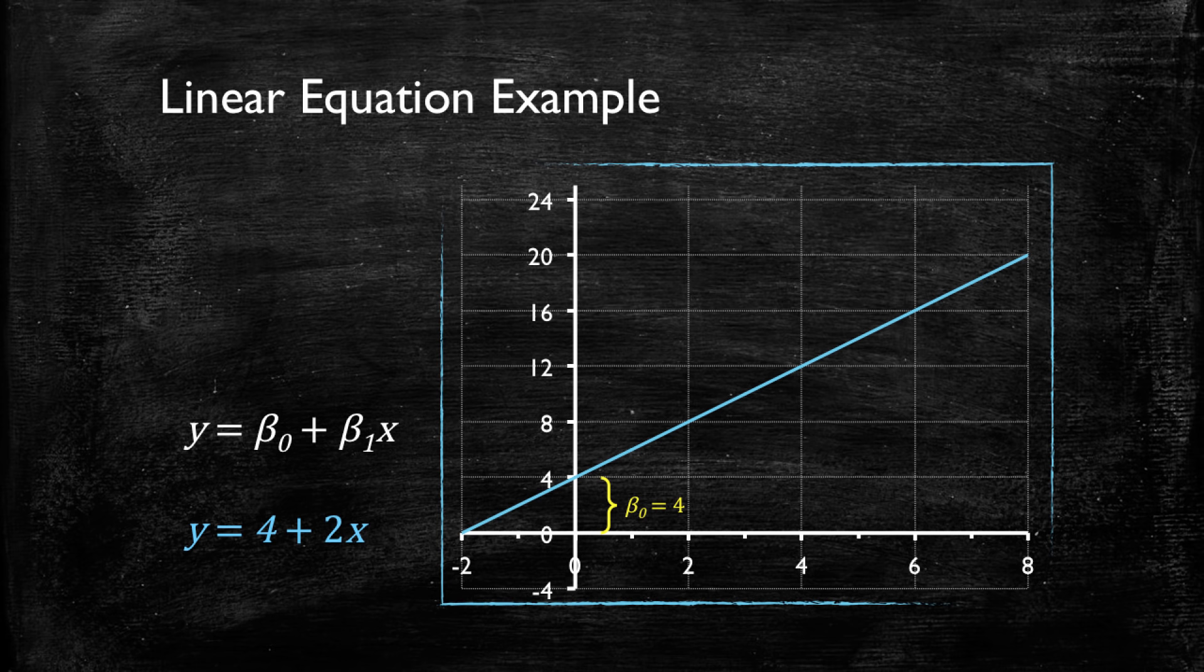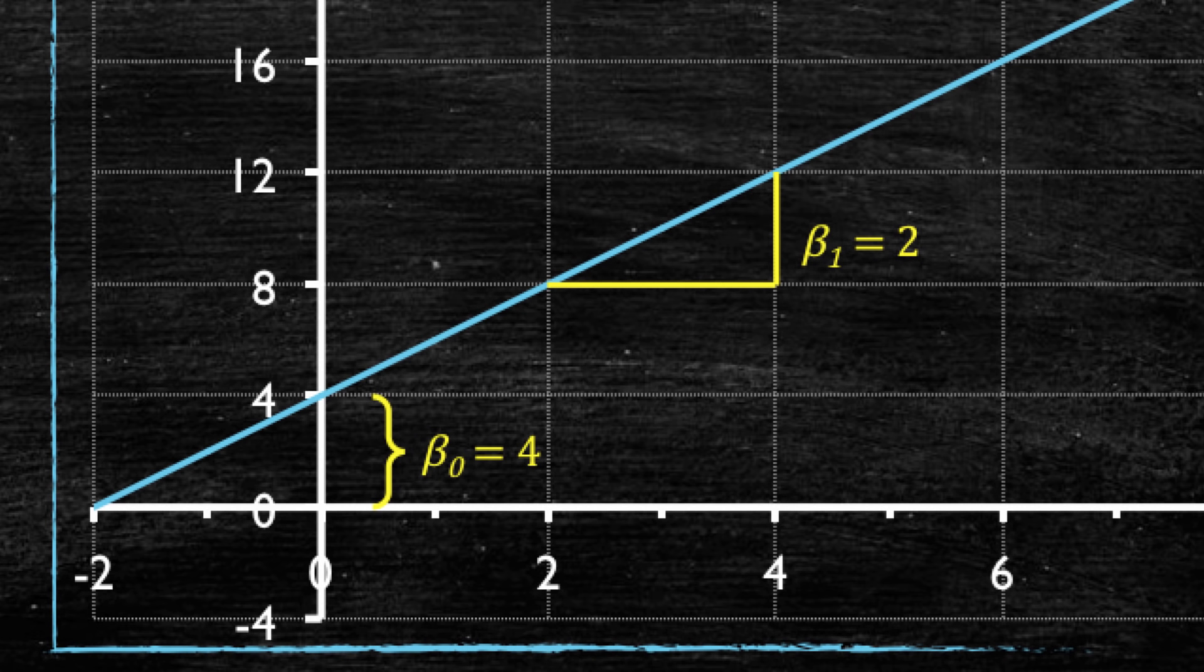The slope in this case is a two, and it means that for every unit increase of x, y will increase twice as much, or two times as much. We see here that x increased from two to four, while y increased from eight to twelve, twice as much.